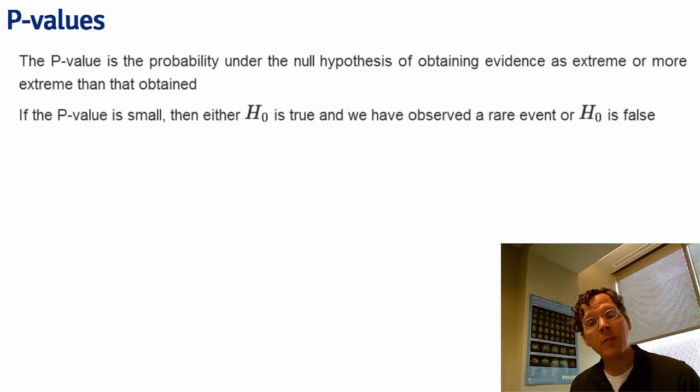If your p-value is small, then either the null hypothesis is true and you've observed something that is highly supportive of the alternative that was quite unlikely, or the null hypothesis is false.